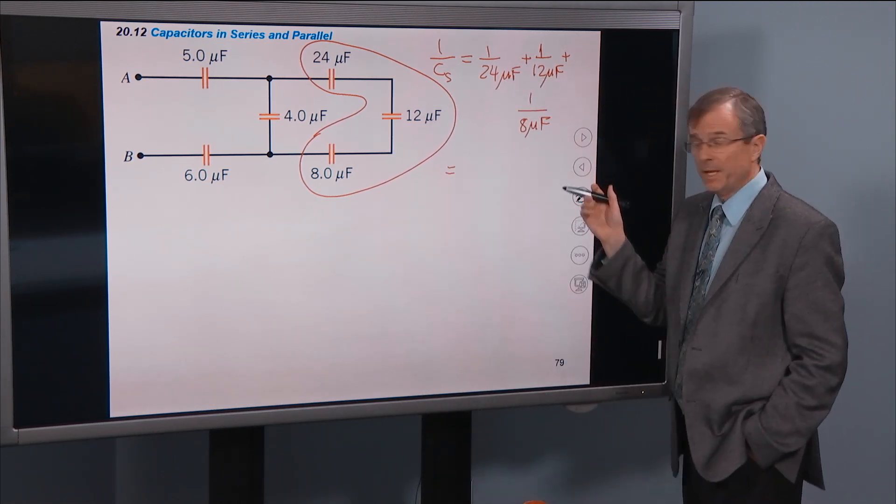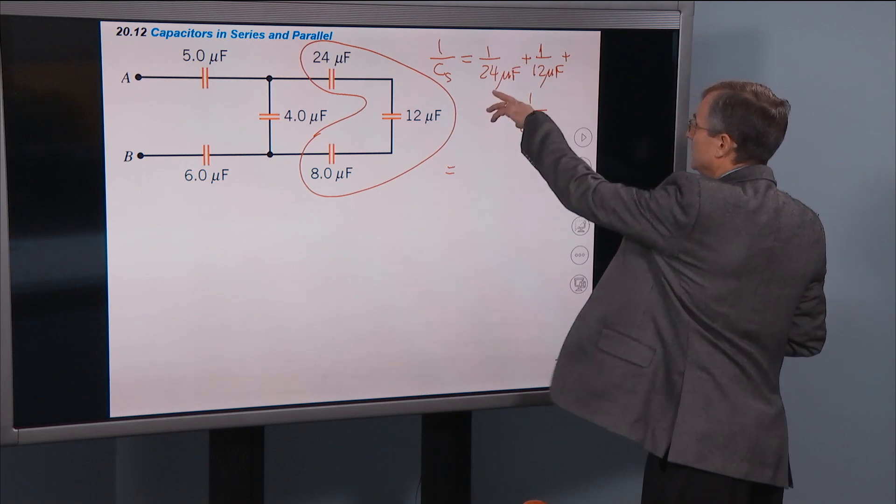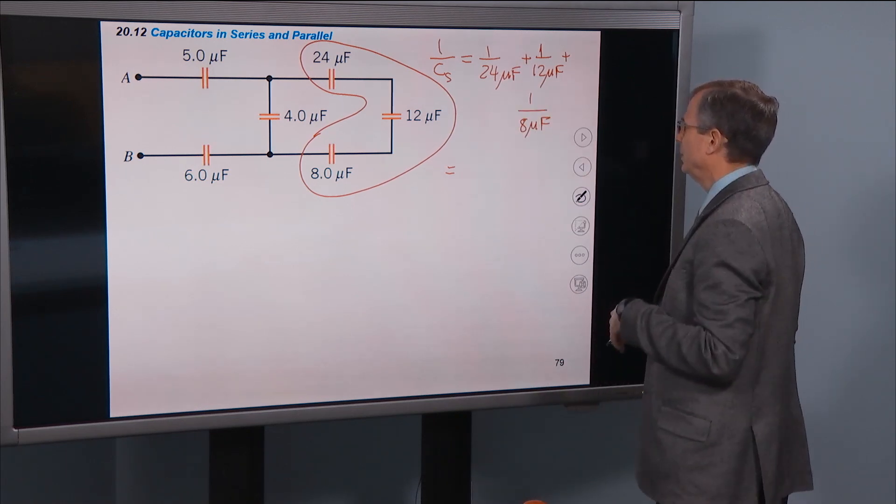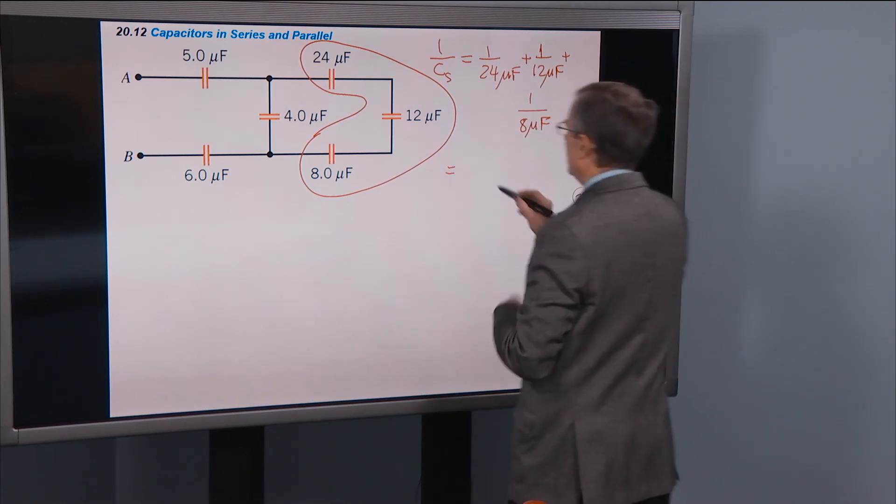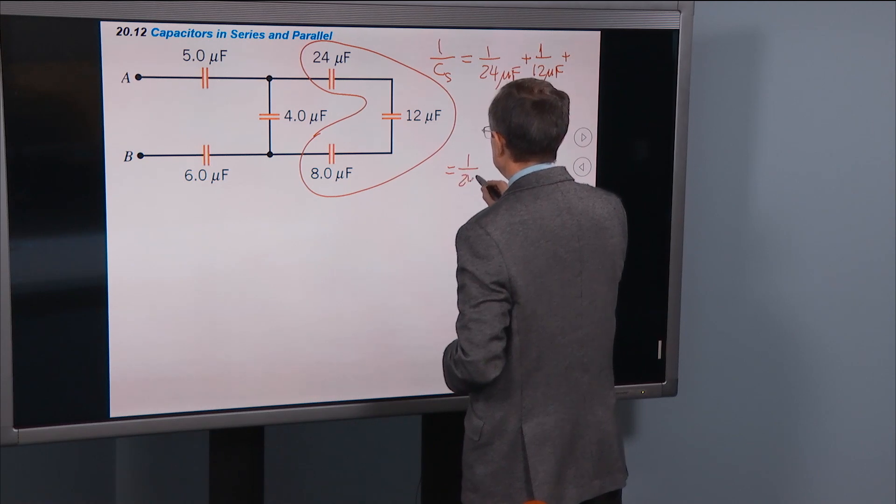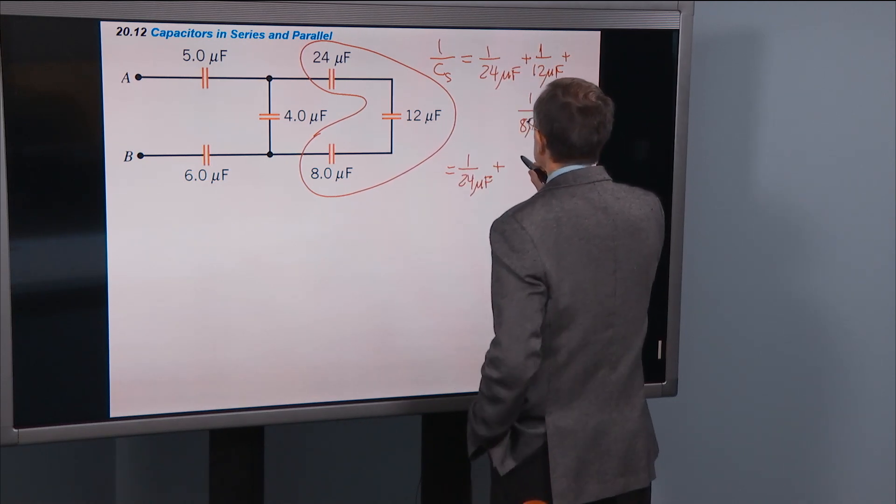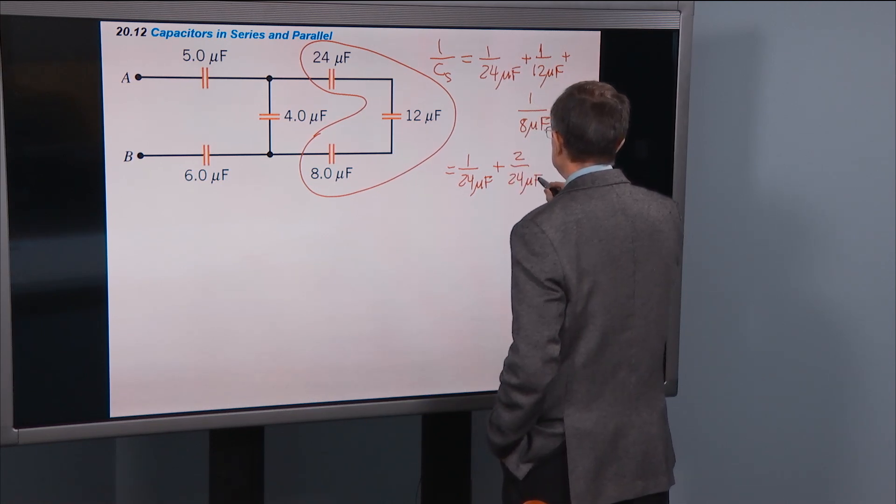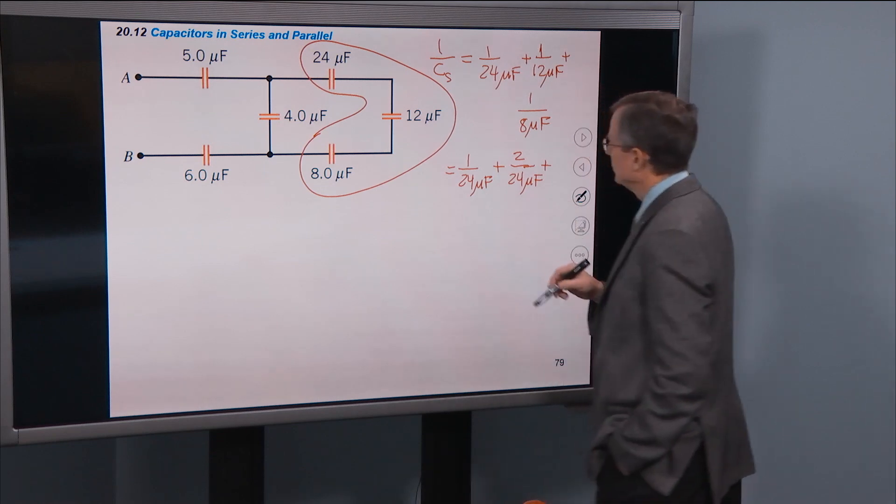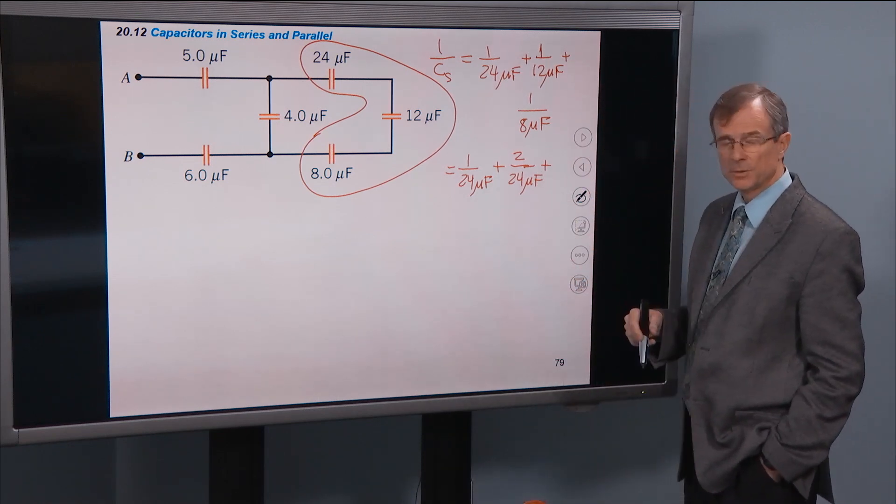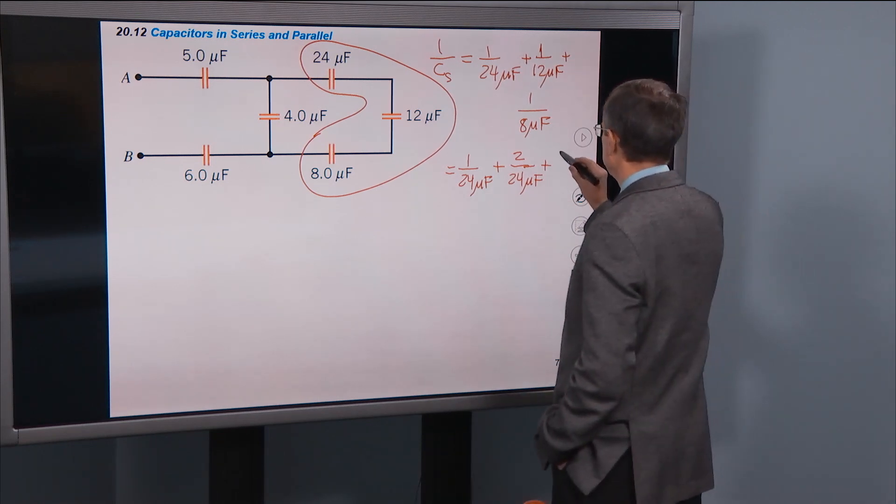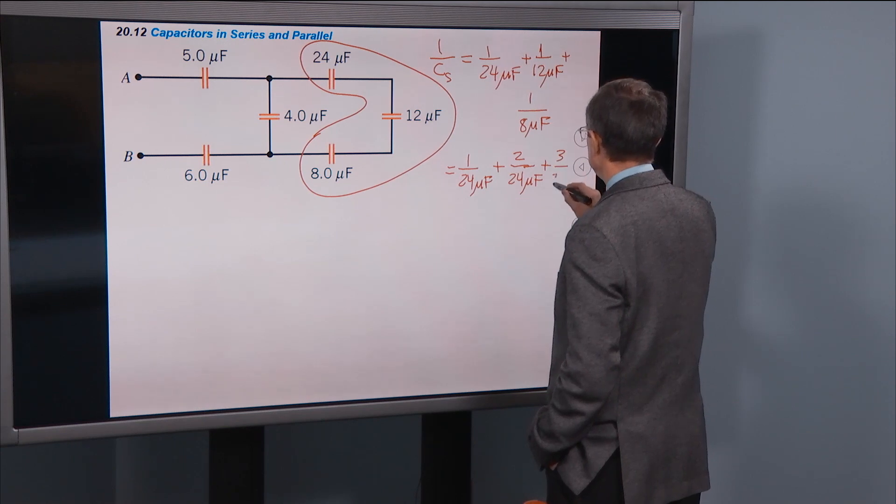Well common denominator, we're going to need one. And the common denominator is 24. So we'll have 1 over 24 plus 2 over 24, plus 8 goes into 24 three times, 3 over 24 microfarads.